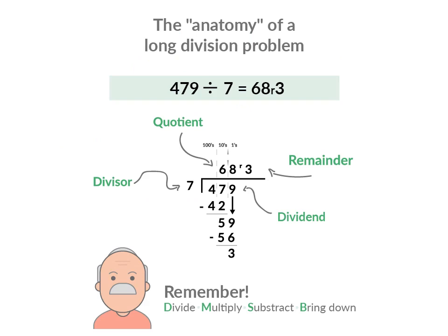The anatomy of a long division problem: 479 divided by 7 equals 68 remainder 3. The 68 is the quotient, the 7 is the divisor, the 479 is the dividend, and the 3 is the remainder.